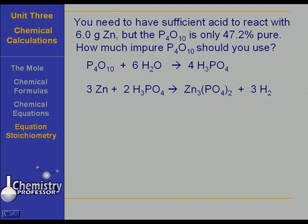Well, what we are going to do is start with our zinc and go from zinc to phosphoric acid. And then once we find how much phosphoric acid we need, we are going to go from phosphoric acid to P4O10. But we are going to assume in all of this first procedure that everything is pure and perfect.